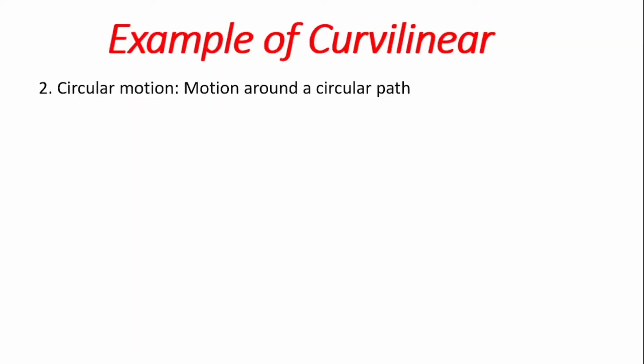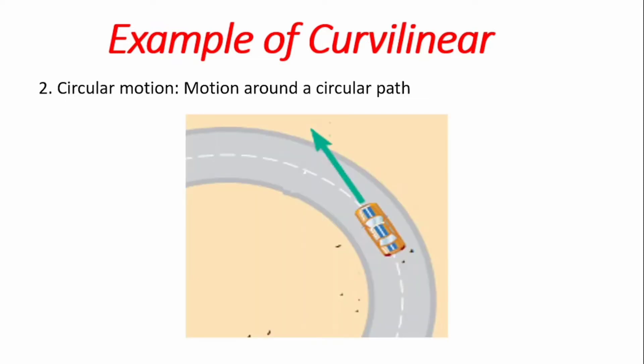We also have circular motion, which is motion around a circular path. It could be the motion of a vehicle along the roundabout of a particular highway, and because the roundabout is circular, we see it is circular motion, which is an example of curvilinear motion.